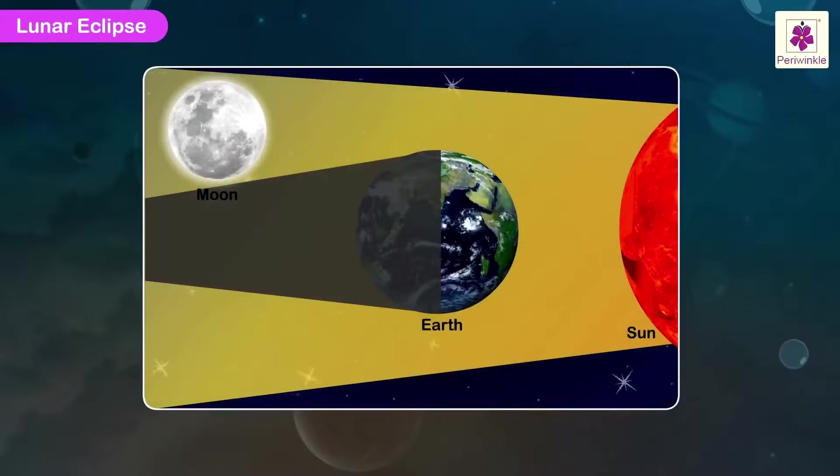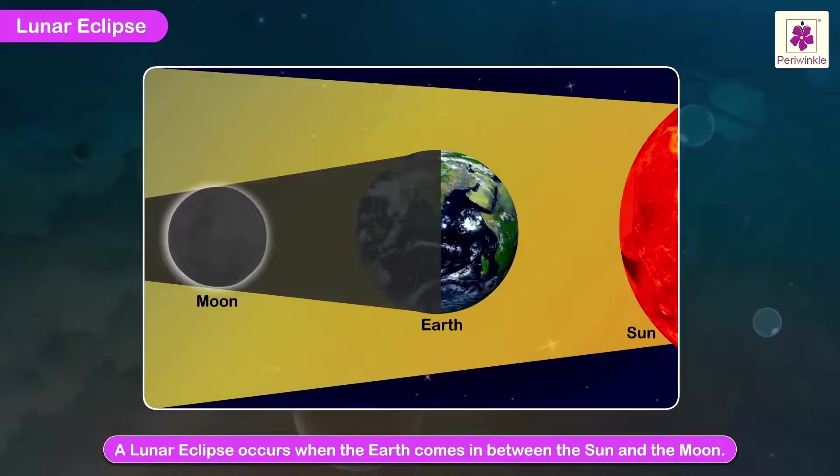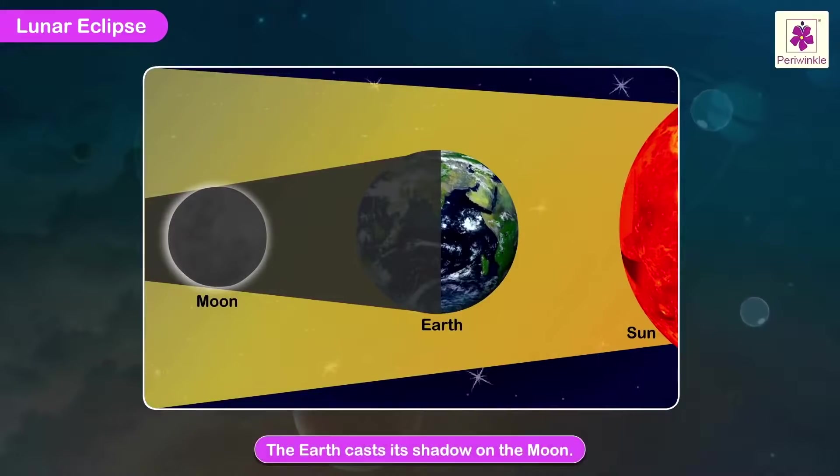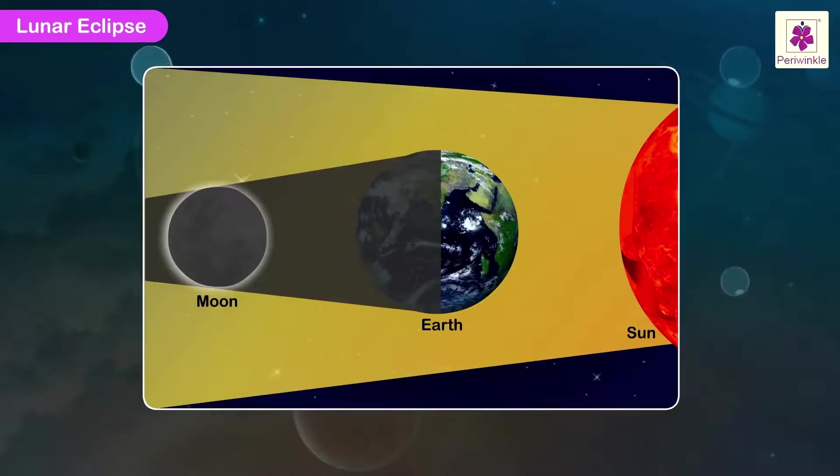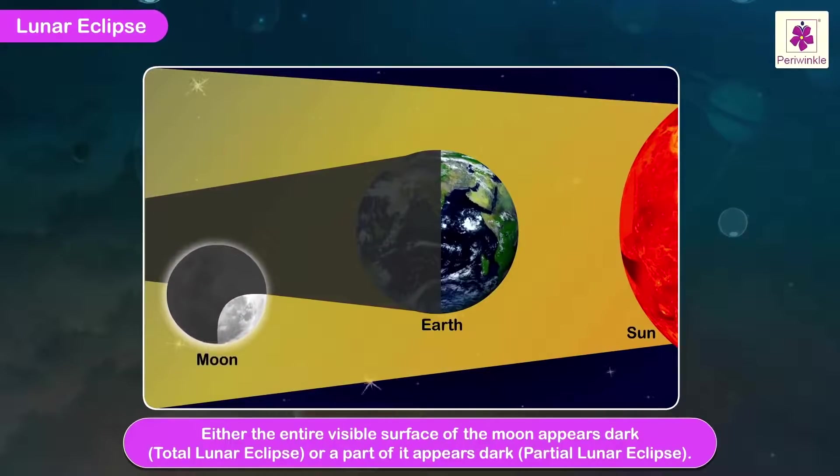Lunar Eclipse. A lunar eclipse occurs when the Earth comes in between the Sun and the Moon. During a lunar eclipse, the Earth casts its shadow on the Moon. Consequently, either the entire visible surface of the Moon appears dark, i.e. total lunar eclipse, or a part of it appears dark, i.e. partial lunar eclipse.